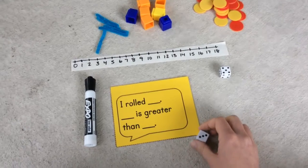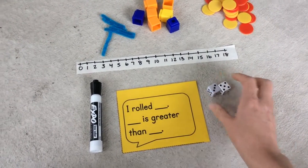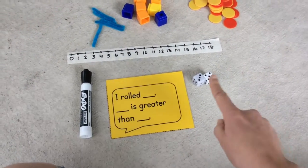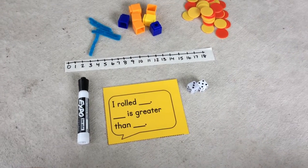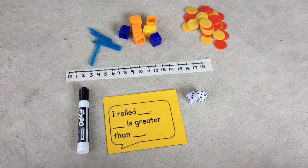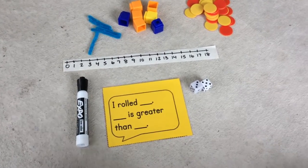Now you need to make a set of counters that is the same as the number you rolled. So I rolled eight. Now I'm going to make a set of eight.